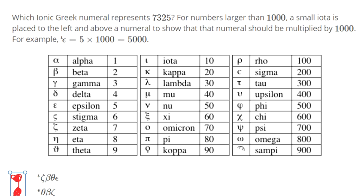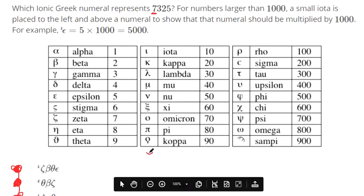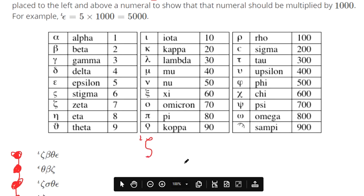This one's asking us to work in reverse. We have 7,325. We need to put that into a Greek numeral. So 7 needs to be in the 1,000s place. Let's find the number 7, which is right here. So we're going to use that symbol, zeta, and we're going to put an iota in front of it to show that's 7,000.